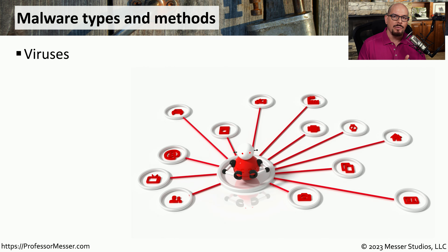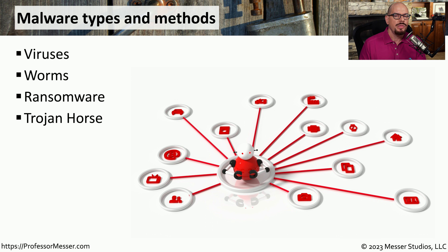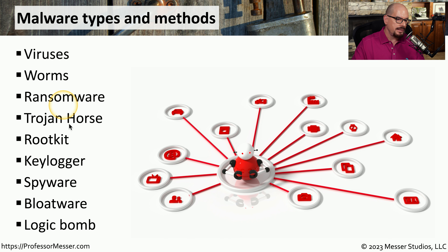When we're talking about malware, we're talking about different types of malicious code. This could be viruses or worms that could infect your system. It may be the ransomware that's encrypting all of the data on your storage drives. Or this could be a Trojan horse, where you think you're installing software to perform a particular function, but in reality, that software is installing malware.